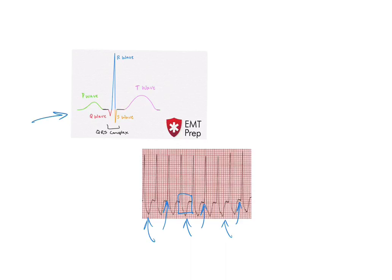Patients who have SVT can complain of chest pain or a funny feeling in their chest, and they may be symptomatic — they could have cool pale dry skin, diaphoretic skin, low blood pressure, or altered mental status. Sometimes they require treatment depending on the patient's background, the disease they're presenting with, and any medications they're taking.